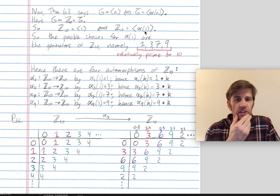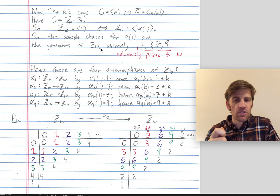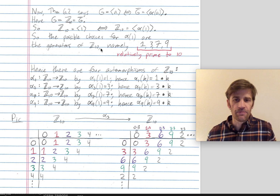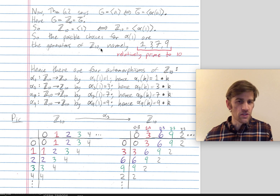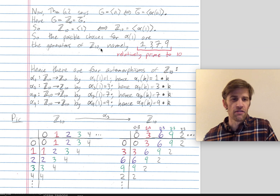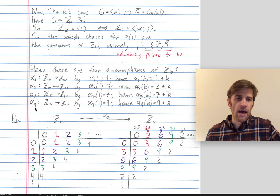The generators of Z mod 10 are the numbers relatively prime to 10: they're 1, 3, 7, and 9. So this tells us that under our automorphism, 1 must get mapped to one of these generators. There are only four automorphisms from Z mod 10 to itself. Let's call them alpha_1, alpha_3, alpha_7, and alpha_9, depending on where the generator 1 gets mapped.